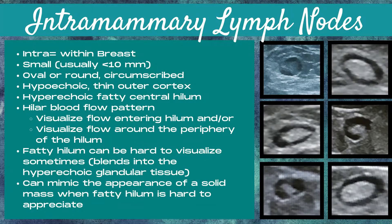Intramammary lymph nodes. Remember that intra means within, so these are lymph nodes within the breast. They are small, usually less than 10 millimeters. They're oval or round and they're circumscribed.